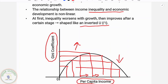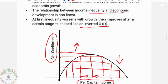Simon Kuznets derived this conclusion from studying developed and developing countries. The first stage involves rising income inequality, and then as development progresses, the inequality becomes less. This forms the inverted U shape.